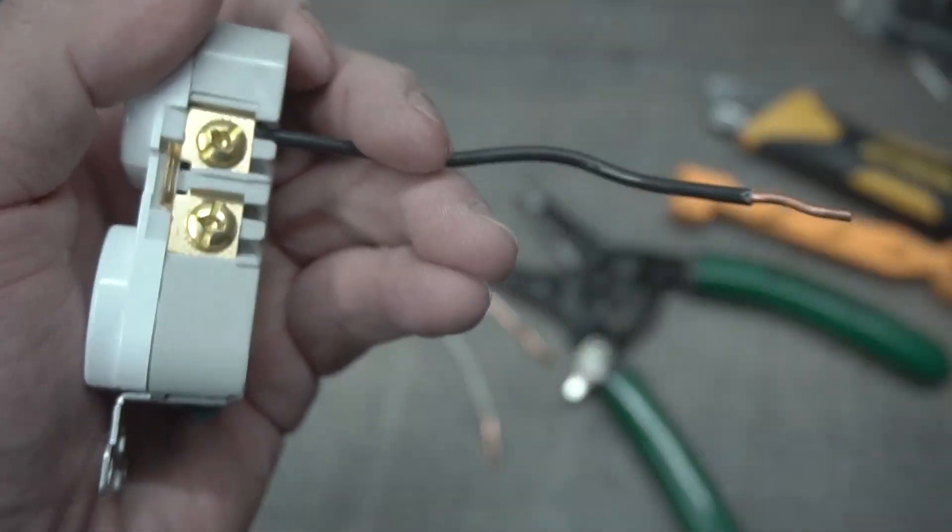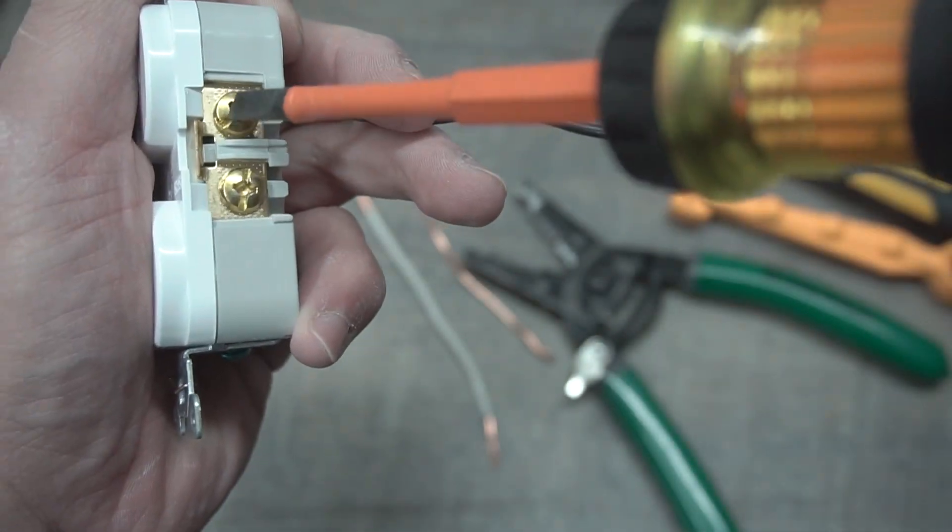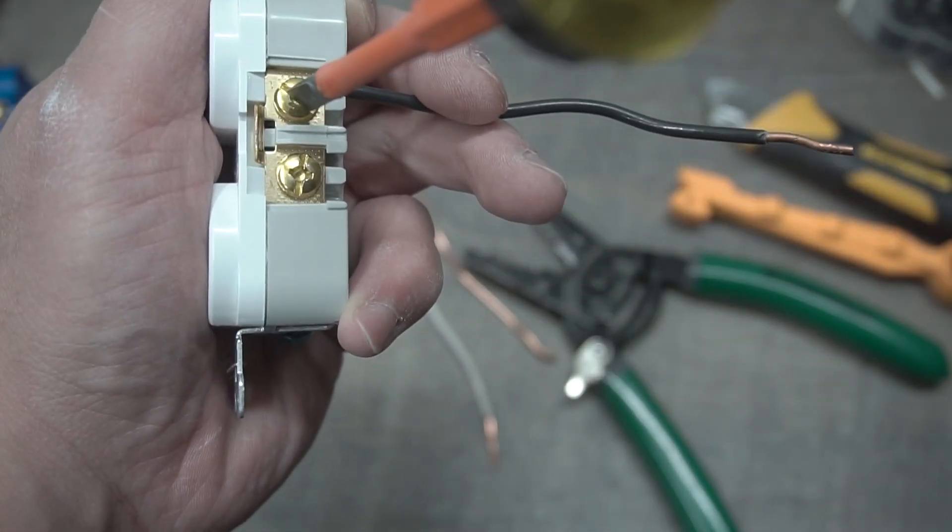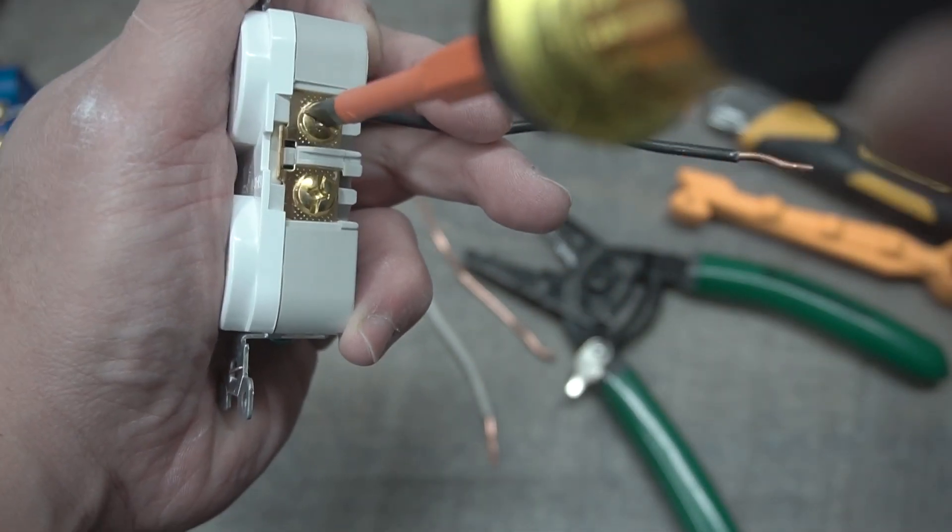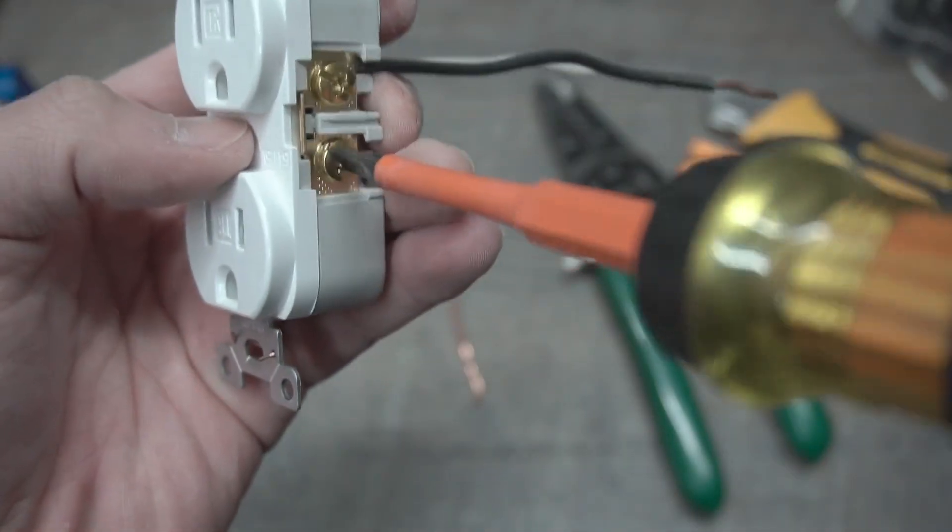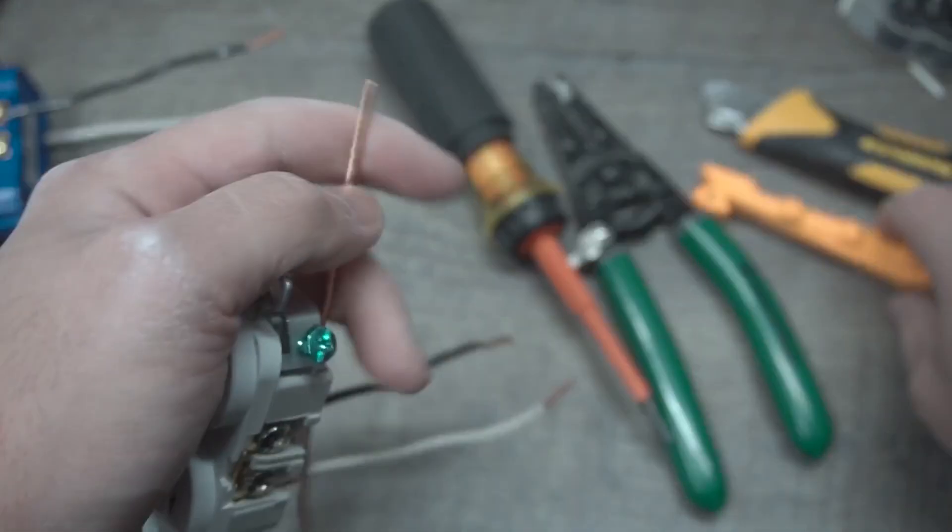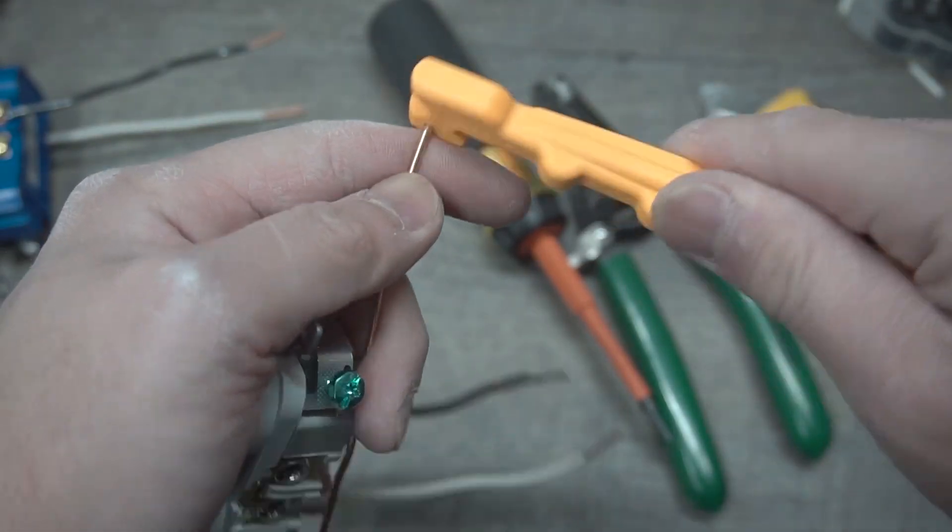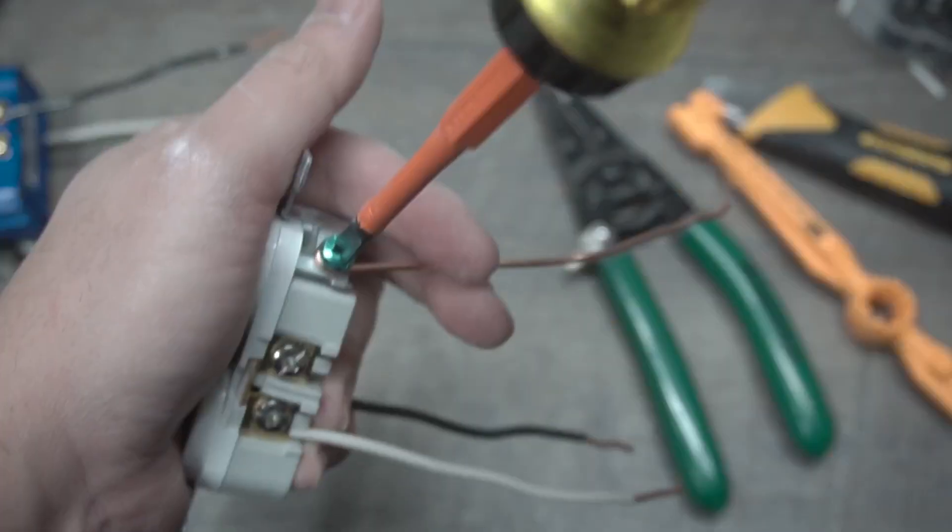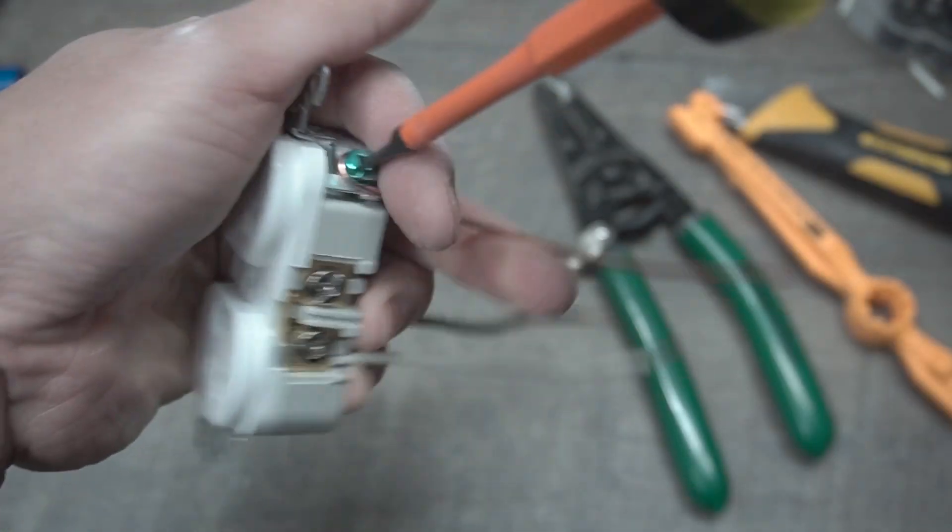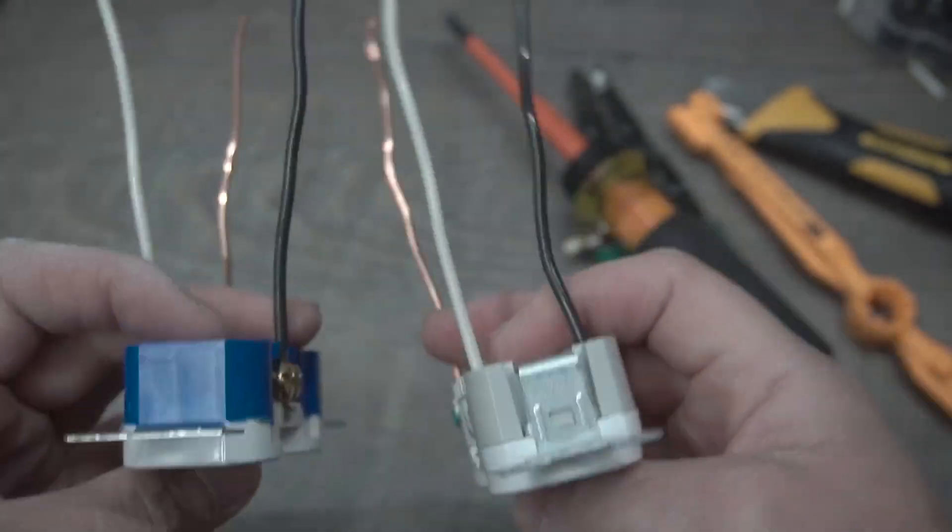Now brass, you can choose any one. It doesn't matter. I like to stay uniform though, so I'll always use the top. Make sure that you tighten down all the other screws, terminals that are not getting used. Unfortunately for this one, it's not a clamp style. So we have no choice but to, again, use that j-hook.